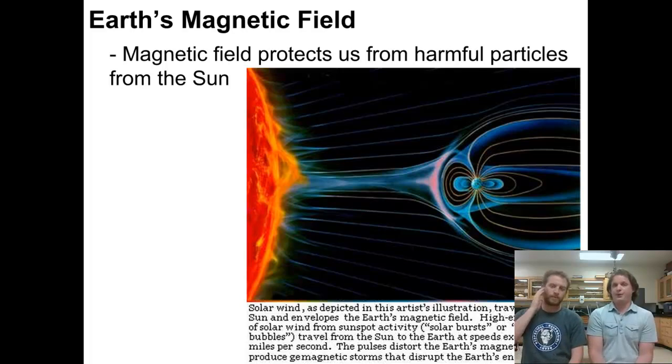So the magnetic field for the Earth actually protects us from harmful radiation from the solar winds. If we didn't have that magnetic field, our atmosphere would pretty much blow away. It wouldn't be there anymore. And we do see another planet that that has happened to, and that's Mars. Mars is considered a dead planet, so it doesn't have this internal engine that the Earth does.